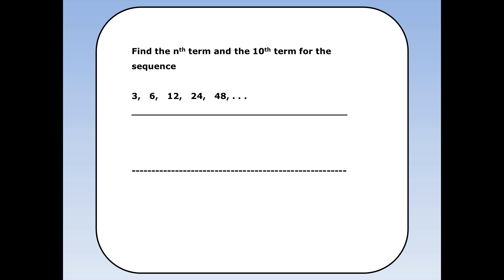Find the nth term and the 10th term for the sequence 3, 6, 12, 24, 48. The first term a is 3 and the common ratio r is 2.